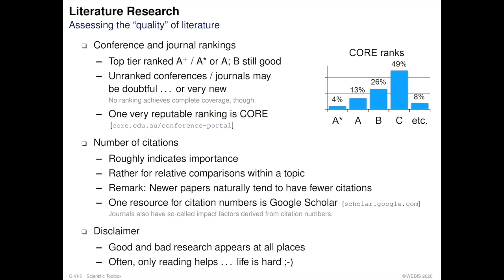But how do you know what is a top conference or an average journal? That's where conference and journal rankings can help. They provide an indication of credibility for conferences and journals. Most commonly, four ranks are distinguished: A-plus or A-star, a top tier of publications with high-quality research of high impact to the field. The A-tier sits slightly below, followed by the B-tier, which still includes trustworthy resources. Unranked journals and conferences might raise some suspicions; however, keep in mind that no ranking can achieve complete coverage.